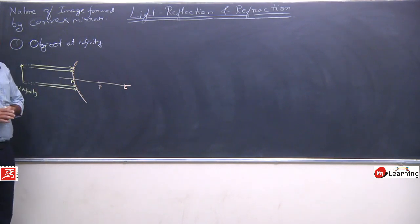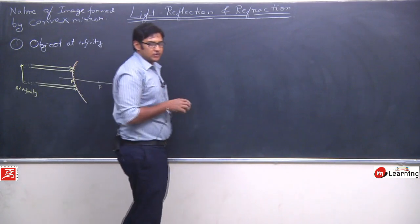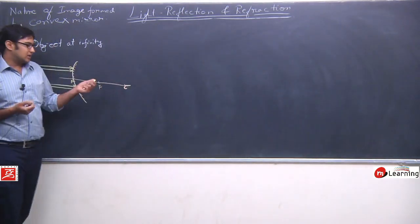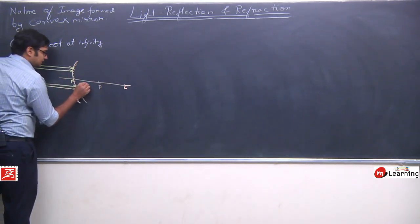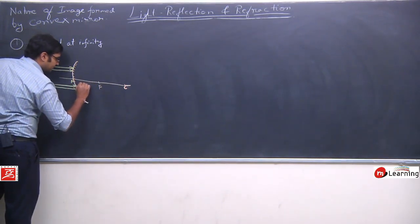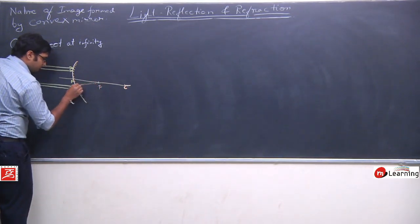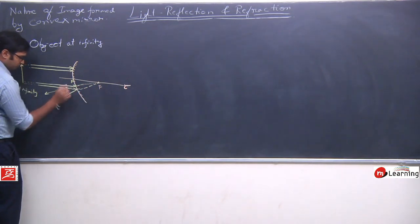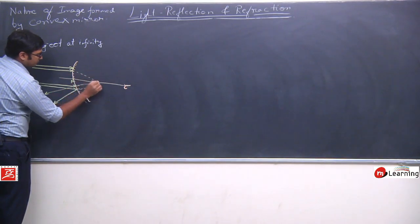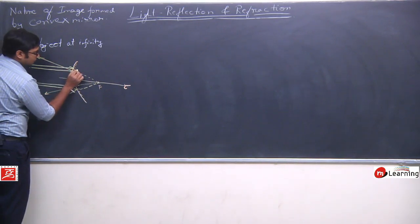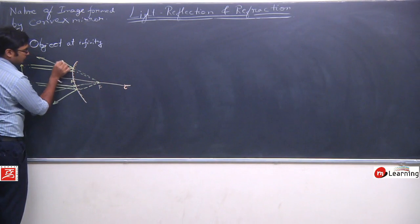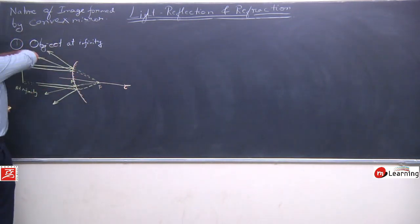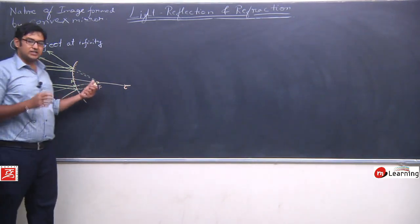The light rays coming from this object will strike this mirror in a parallel manner, and after striking, they will reflect back following the law of reflection. We had seen that when a light ray strikes a spherical surface in parallel, it passes through the focus, or it appears as if it is passing through the focus. So, these light rays will reflect back such that they appear to come from the focus.